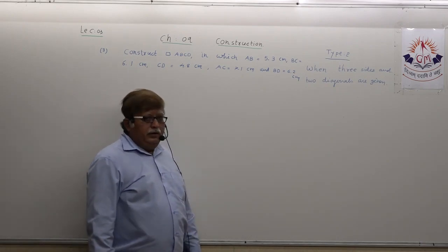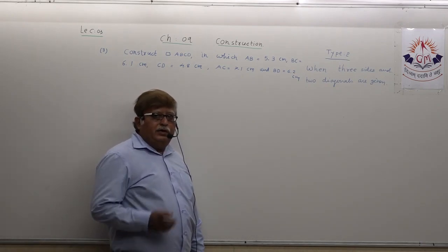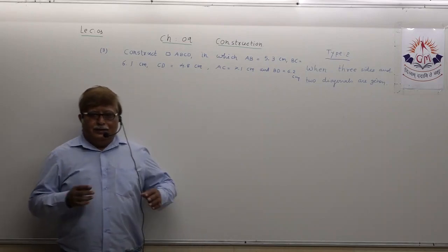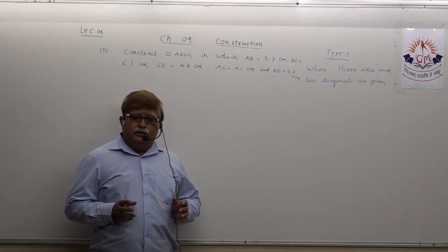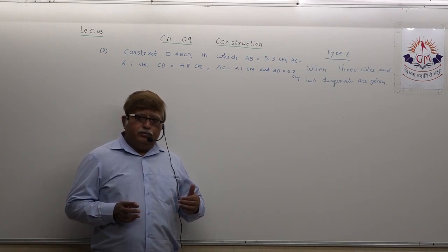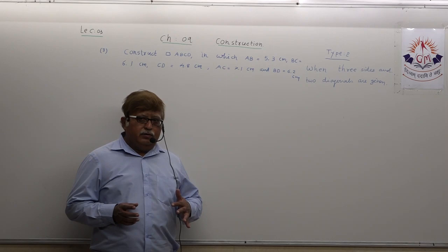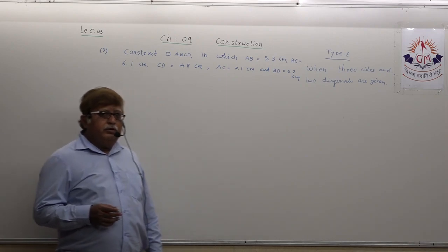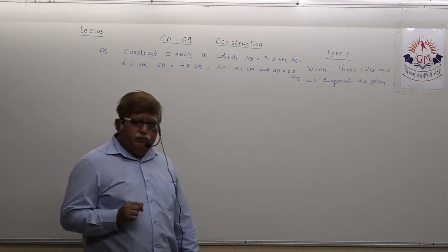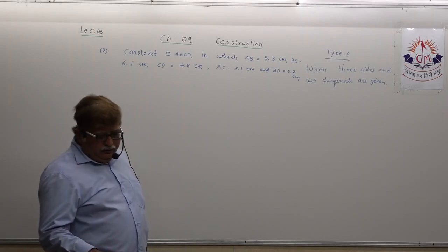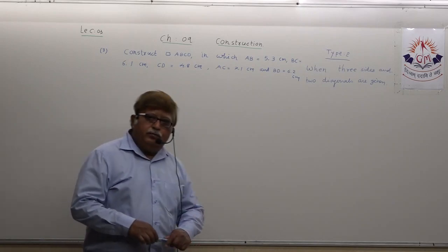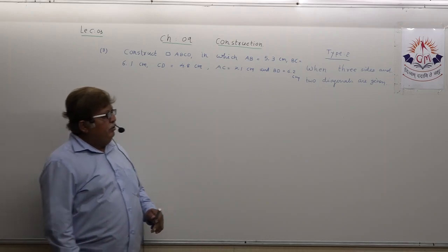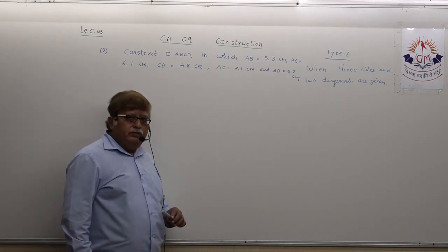Nobody in the exam is going to clarify for you that this is a type 2 construction. When you are given three sides and two diagonals, nobody is going to disclose that. It is you yourself who has to judge which type of construction it is.